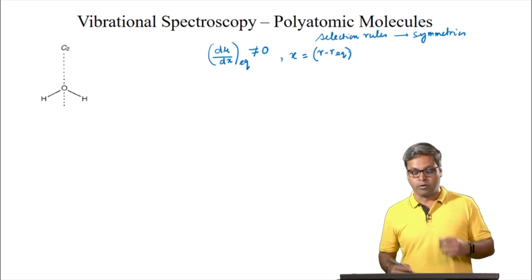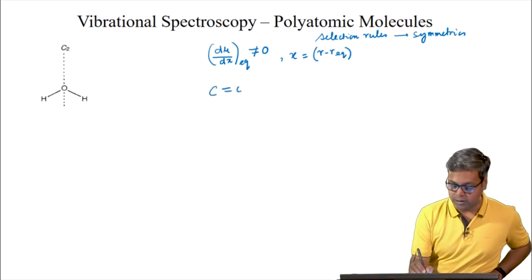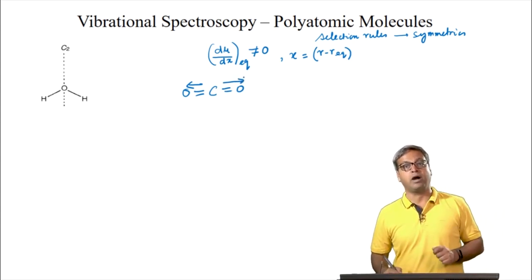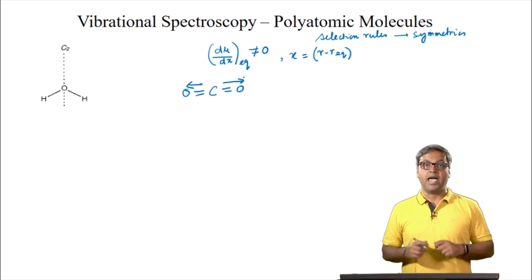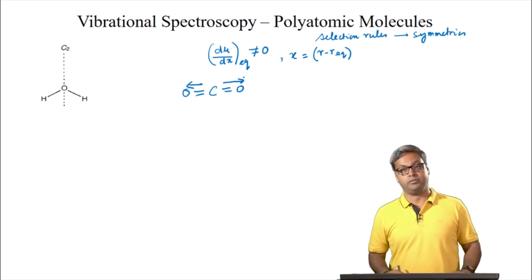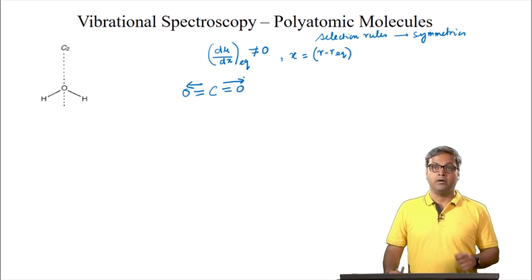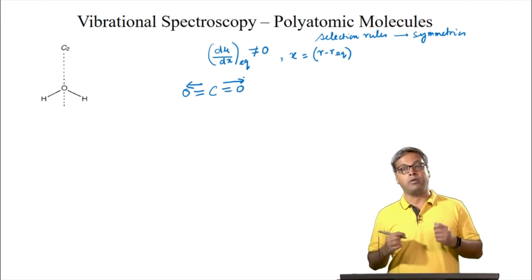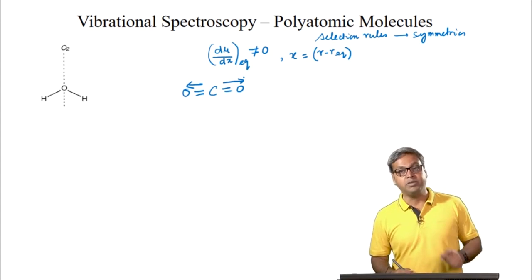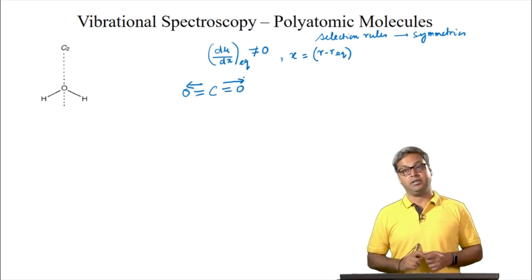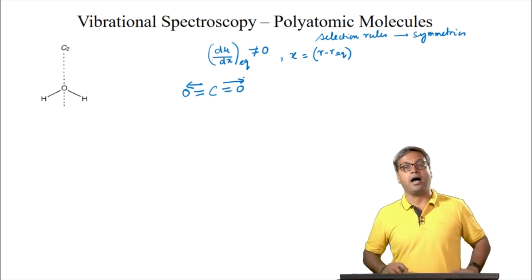The symmetric stretch of carbon dioxide: here both the CO vibrations are in phase. This symmetric stretch of carbon dioxide is IR inactive as it does not generate a dipole moment at any point during the vibration. This explains why there are only 2 vibrational bands in the infrared spectrum of carbon dioxide rather than 4. One is missing as the 2 bending modes are degenerate, and the second is missing as the symmetric stretch is IR inactive.